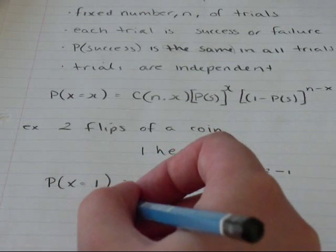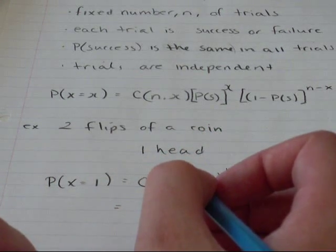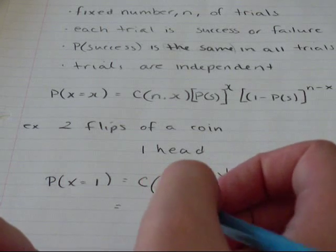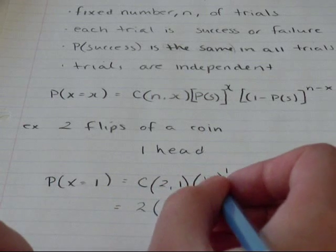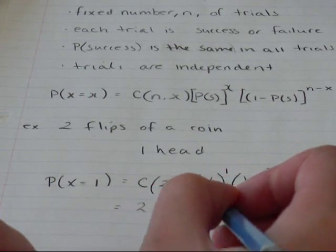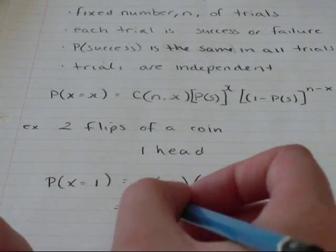So it is C(2,1) is the same as just two. One half to the power of one is one half. And one half to the power of one is one half.